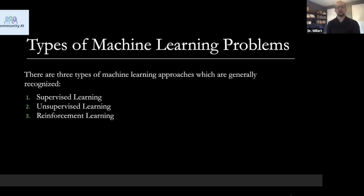There are generally three types of machine learning approaches recognized in textbooks and online courses. The first is called supervised learning. The second is unsupervised learning. And the third is reinforcement learning. If you picked up a book maybe five years ago, it may not have discussed reinforcement learning, but it's a really cool topic gaining popularity every day, and the field is changing as we speak.